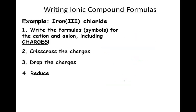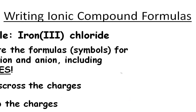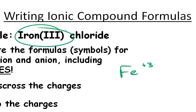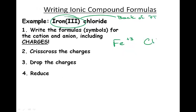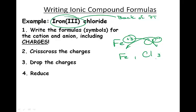Iron(III) chloride: iron three is Fe with a positive three charge — find it on the back of the periodic table. Chloride is negative one. Crisscross the charges: Cl with a positive three, Fe with a negative one. Drop the charges and reduce — the formula is FeCl₃.